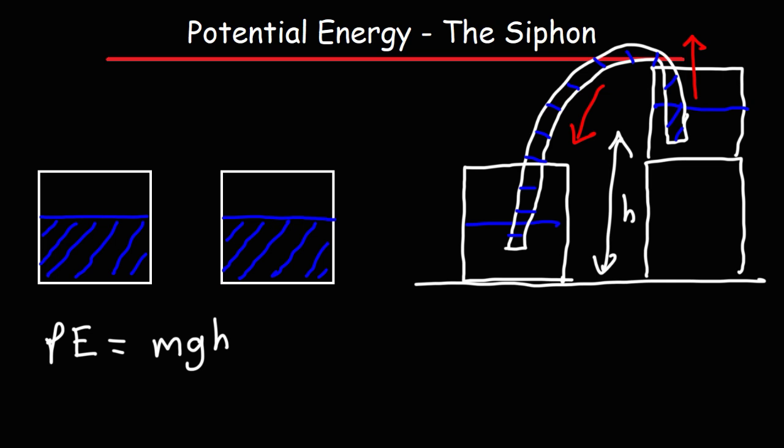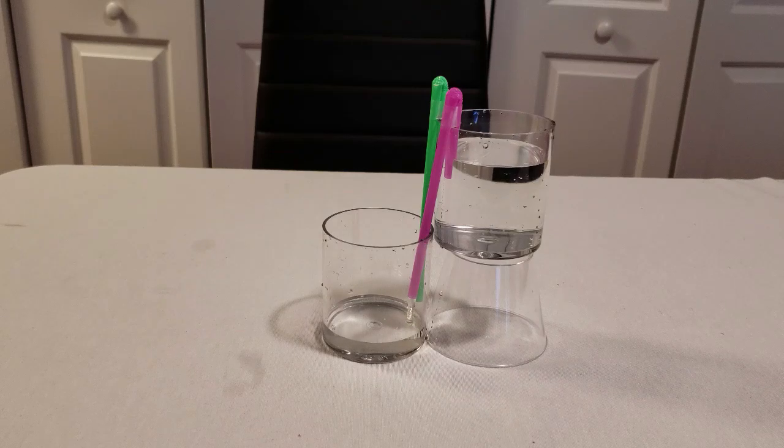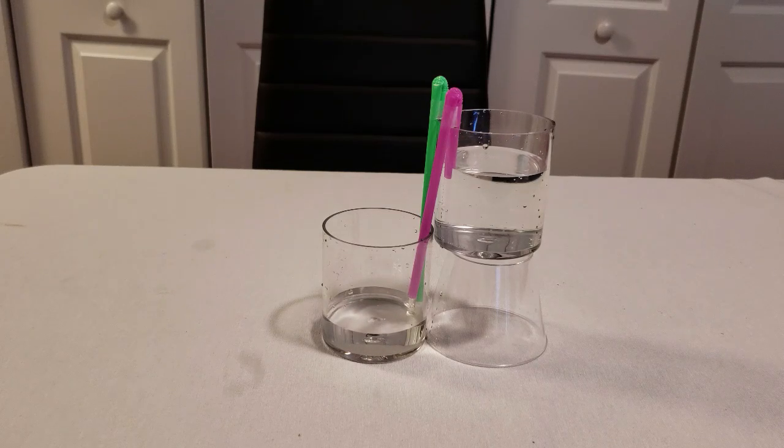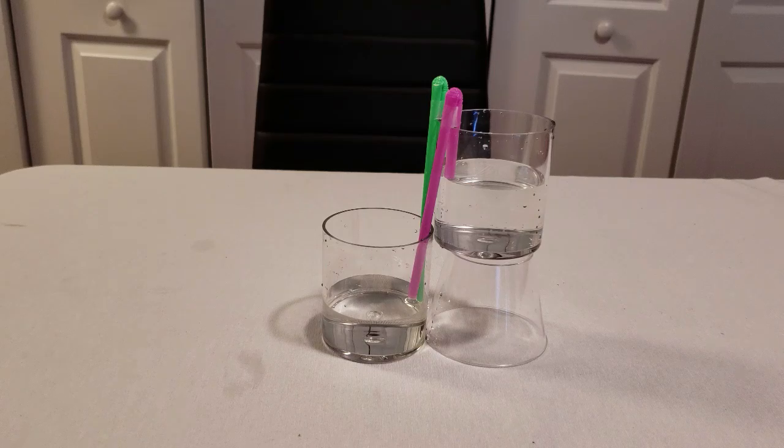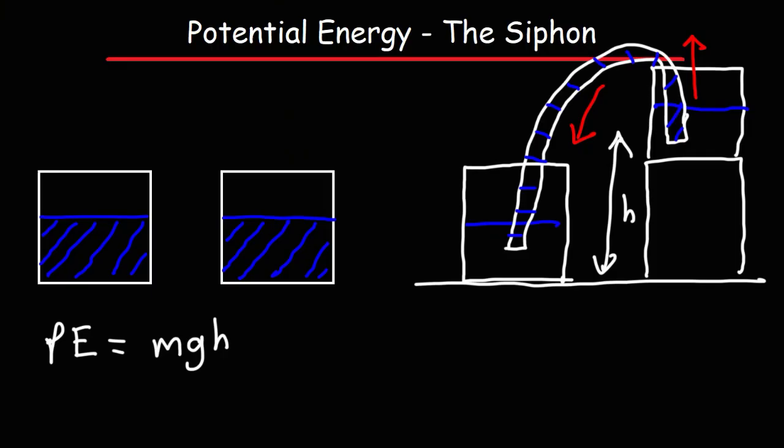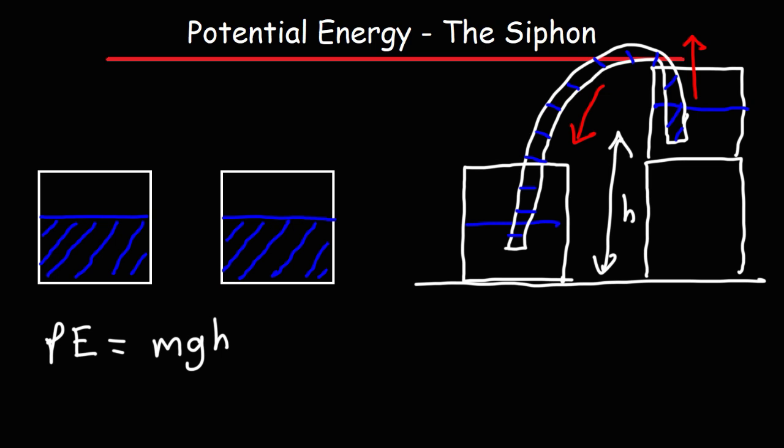As you saw in the last clip, the green straw initially contained no fluid, and so that's why it wasn't pulling up water out of the container that was placed above the table. The table would be the ground level in that particular demonstration. In that demonstration, the pink straw had water in it. As a result, it was able to pull up fluid and then bring it down.